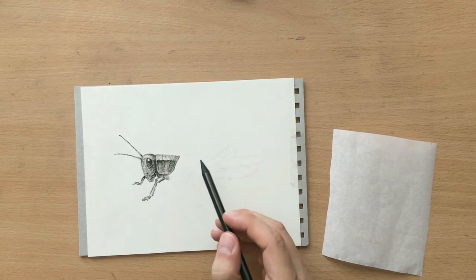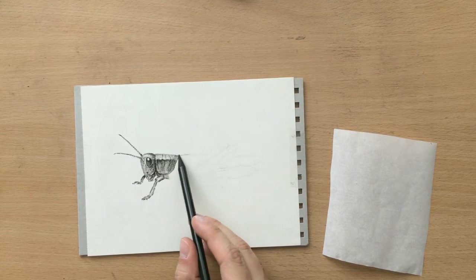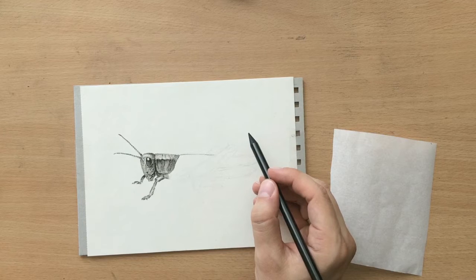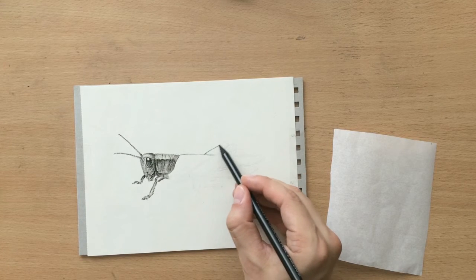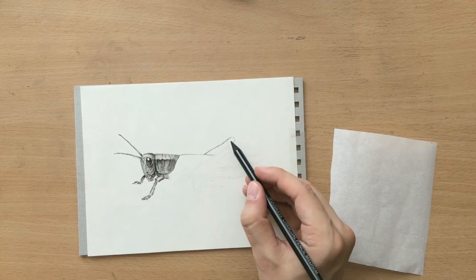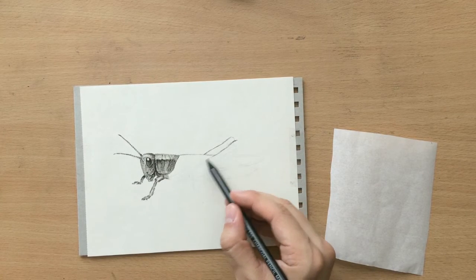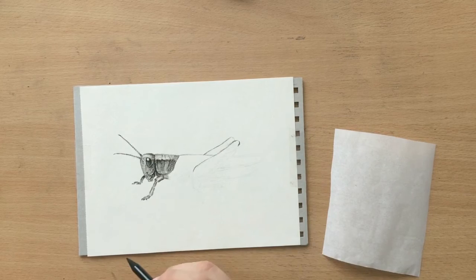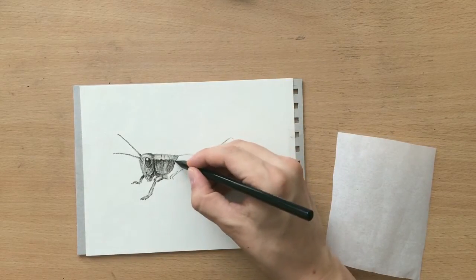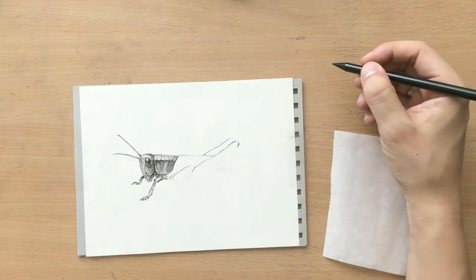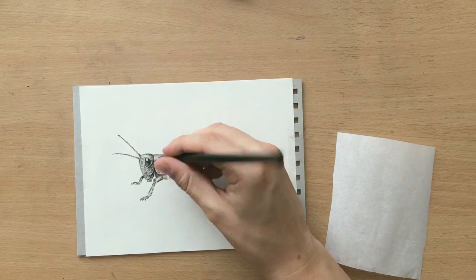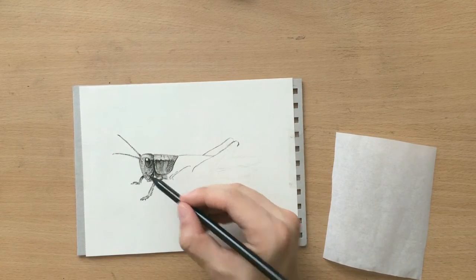The same thing here. Okay, on to the top part of the wings. What was I doing here? This thing needs to be way bigger. I feel like I rushed a little bit with my initial sketch, so I'm not entirely happy with some of the proportions but I think I can fix some of them as I go along.